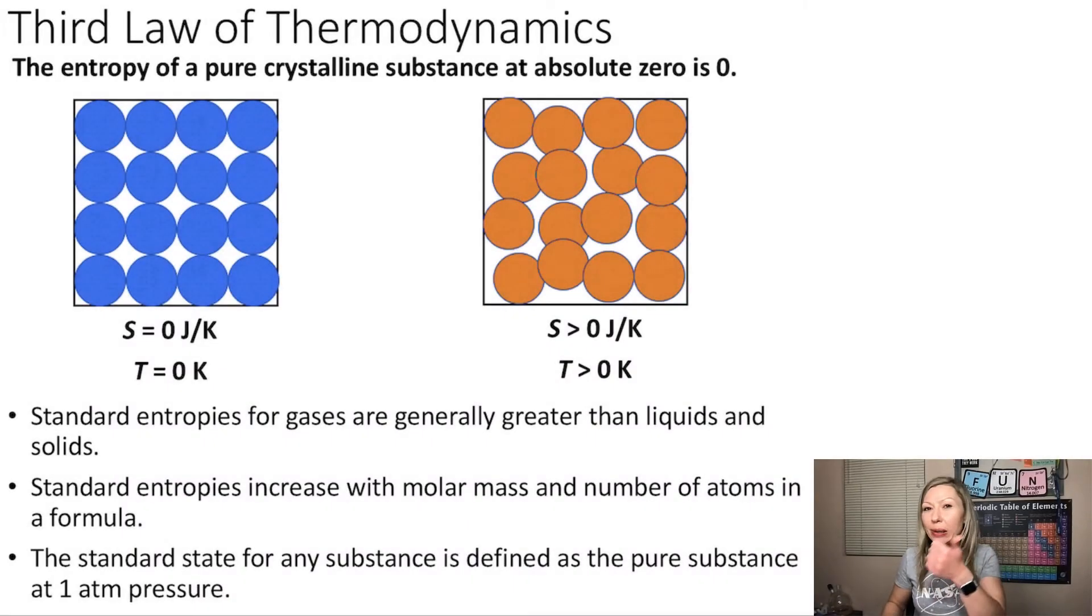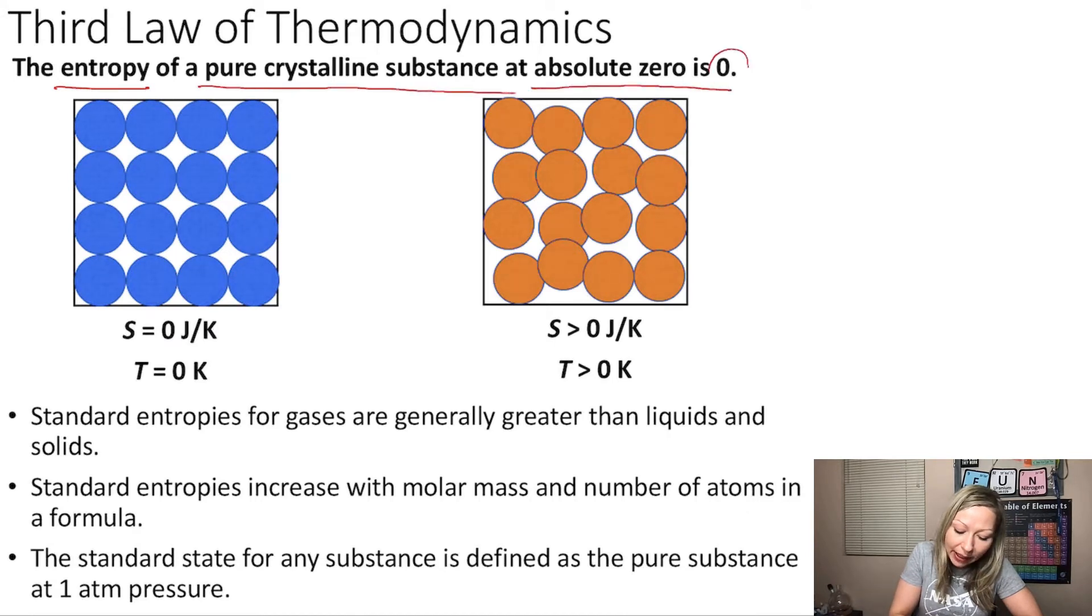Hello guys, we talked about the first, the second, now let's talk about the third law of thermodynamics. It states that the entropy of a pure crystalline substance at absolute zero is zero. So what is absolute zero? It is zero Kelvin.